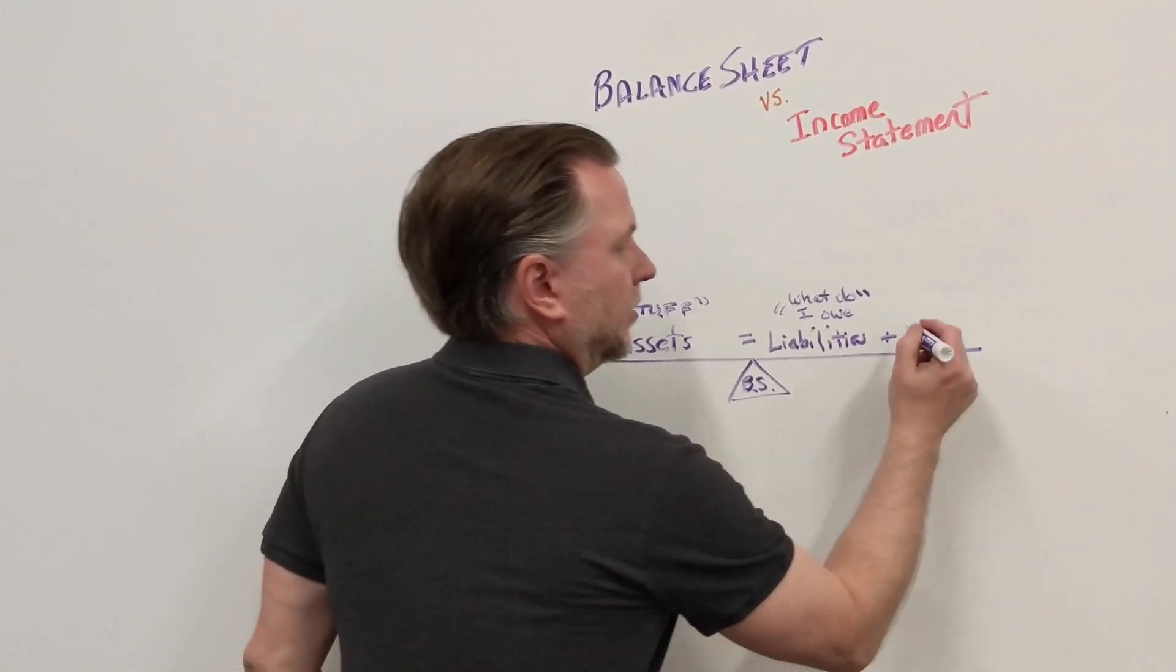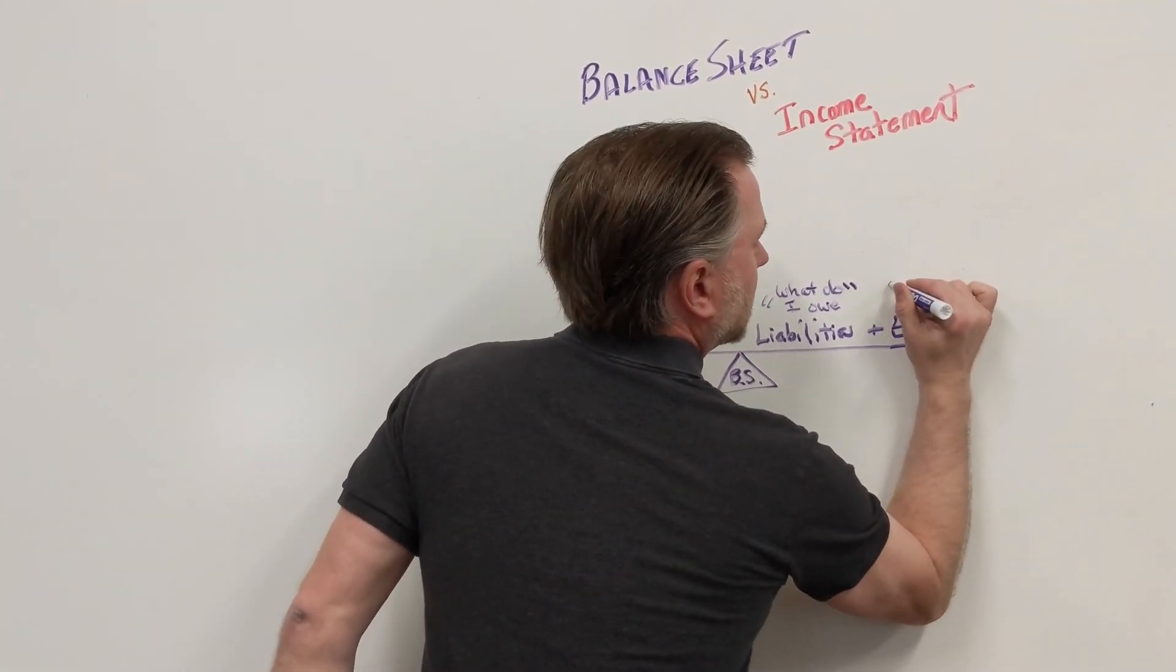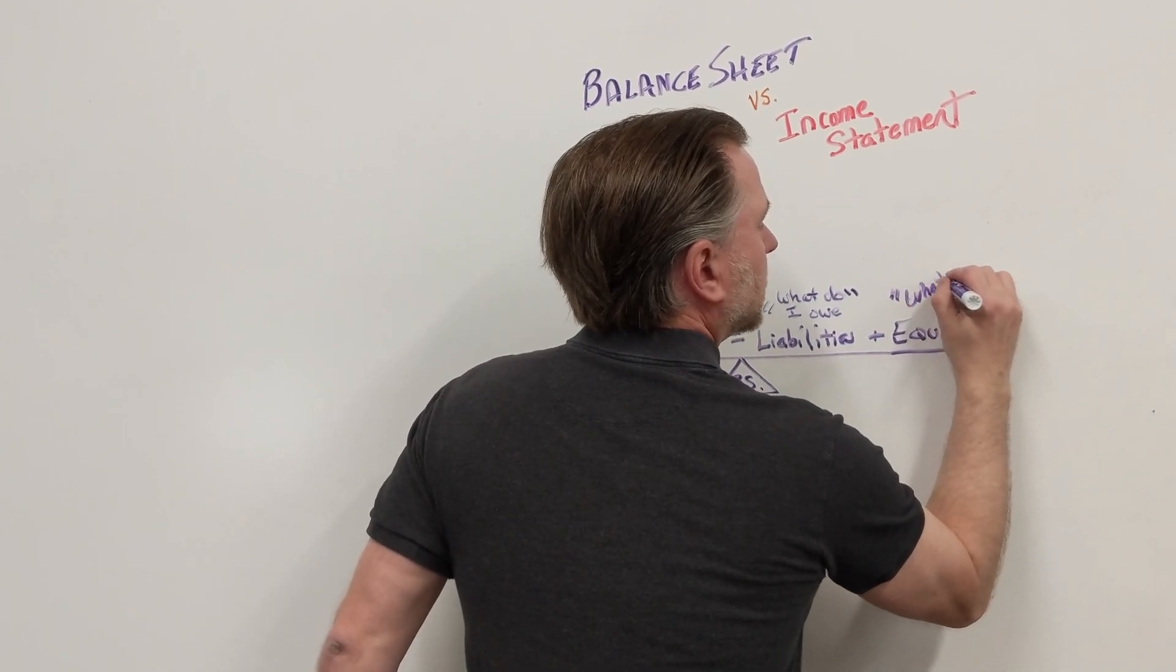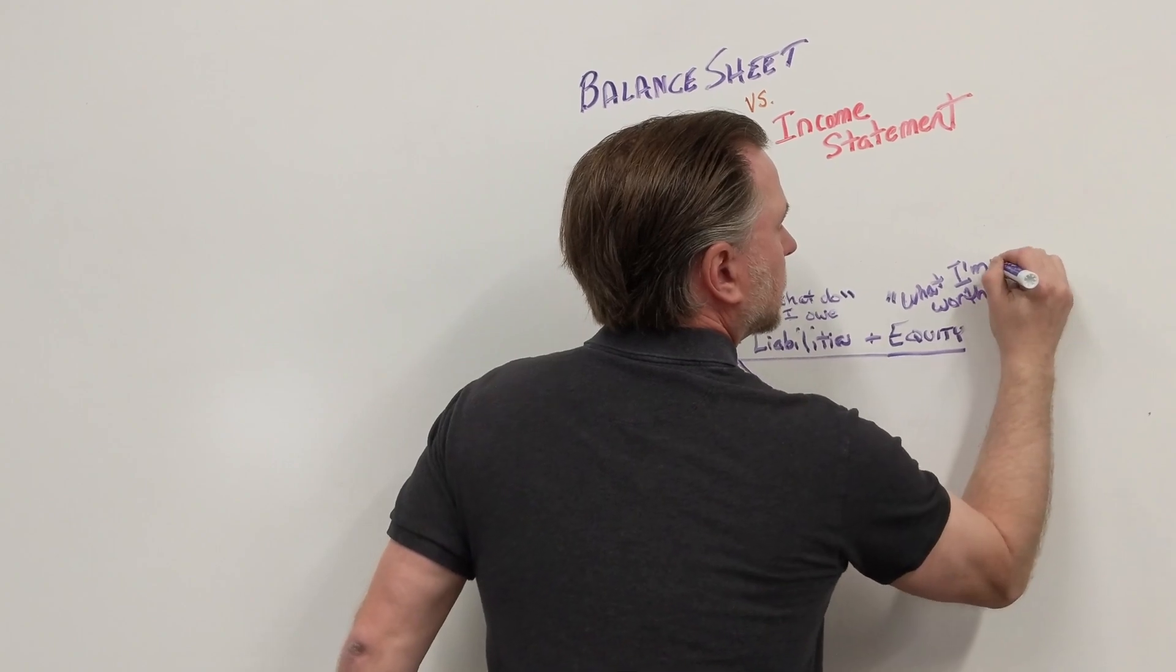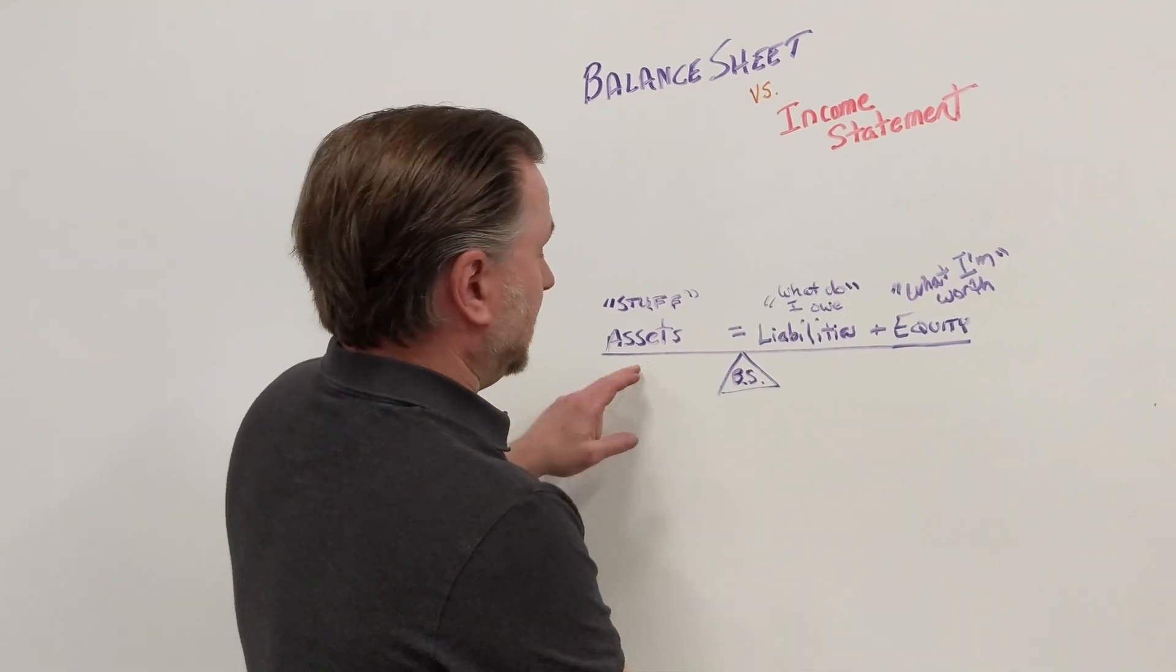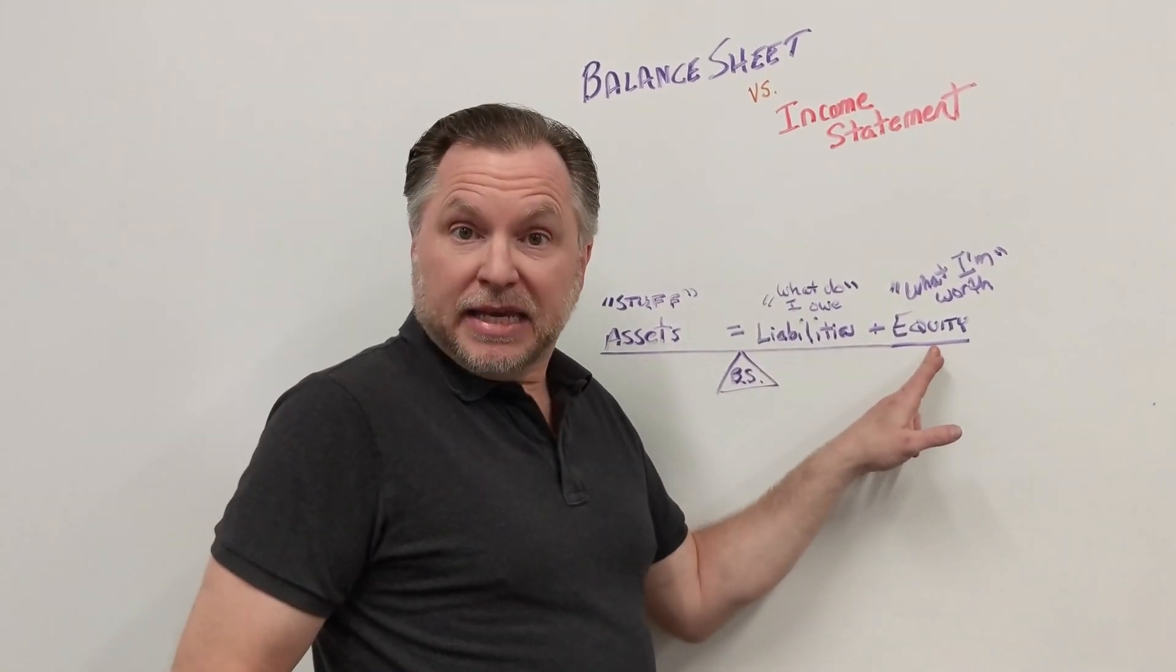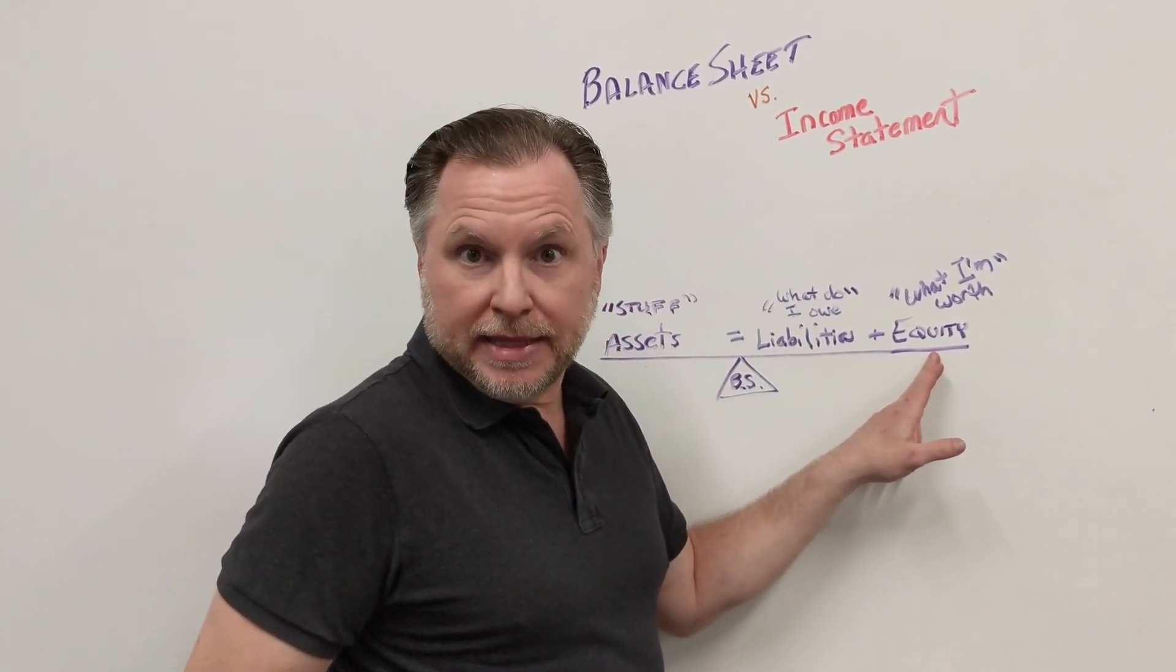And then finally, we have equity, which is what I'm worth. What I'm worth, or it could also be what I already had. So to get an asset, I can either dive into my pocket and see what I already had or what I'm already worth and use that to buy that asset.